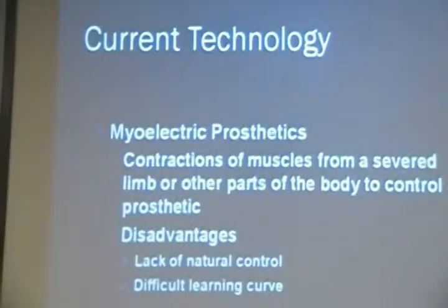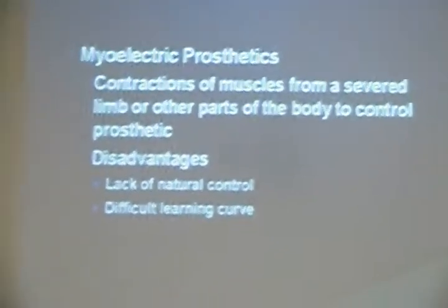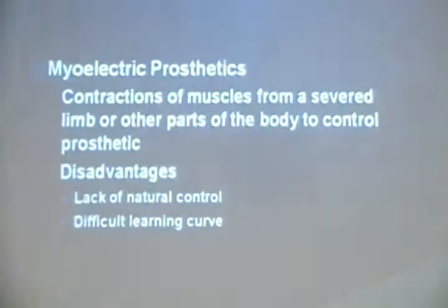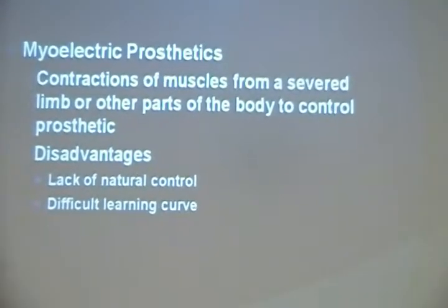What is the current state of technology being used to help amputees? It's the use of myoelectric arms. The problem is that myoelectric arms use the residual, remaining muscles from the patient to operate prosthetics. This is not natural and doesn't come intuitively to the patient, because you have to learn. It takes so much time and effort for the patient to learn how to use the arm with that kind of muscle signal.